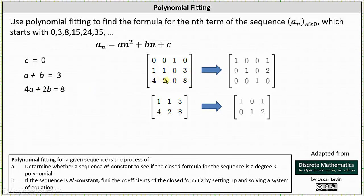Writing the augmented matrix in reduced row echelon form: the first row indicates a equals one, the second row indicates b equals two, the third row indicates c equals zero. The other option is to use the two-by-three augmented matrix, where the first row 1, 1, 3 represents a plus b equals three, and the second row 4, 2, 8 represents 4a plus 2b equals eight. Writing this matrix in reduced row echelon form again gives a equals one, b equals two, and we remember c equals zero.